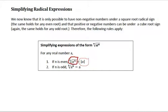If the index is odd, we don't need the absolute value, so we can simply say this nth root of a to the n equals a.